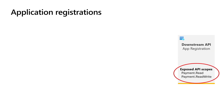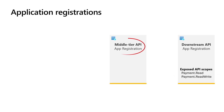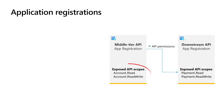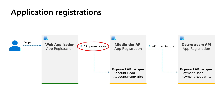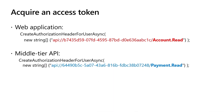That's all. I've registered two APIs and one application. I started with the downstream API registration and exposed two scopes to the middle tier API. Then I registered the middle tier API and granted it permissions to the exposed scopes of the downstream API, so the middle tier can call the downstream API with the corresponding scopes. The middle tier app registration also exposes its own scopes to the web application. The web application is also registered to allow users to sign in and is granted permissions to call the middle tier API.